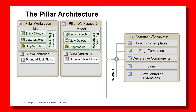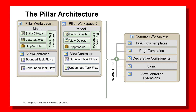On the left-hand side of the diagram, we can see what in the previous episode would have been our cylinder workspaces — now called pillar workspaces. These include the model project with entity objects, view objects, application module, and one-to-many bounded task flows related to a logical grouping such as financials, HR, or procurement. The difference from the cylinder architecture is that each pillar defines its own unbounded task flow, requiring at least one to orchestrate all the bounded task flows together.